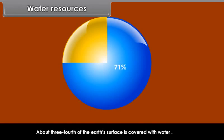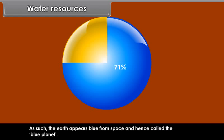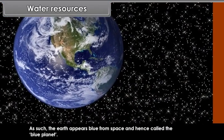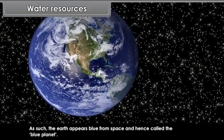71% of Earth's surface is water. As such, the Earth appears blue from space and hence is called the blue planet.